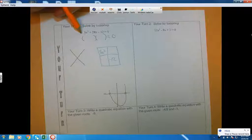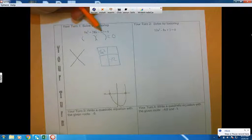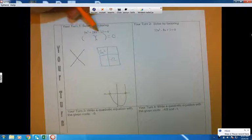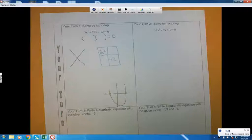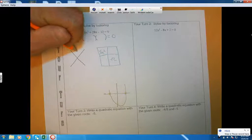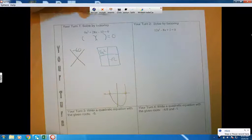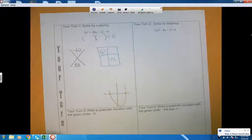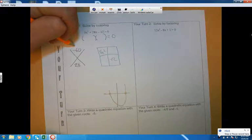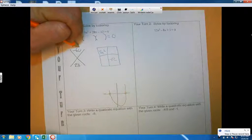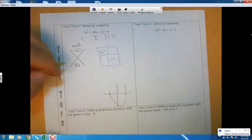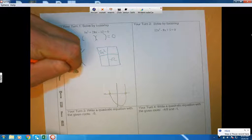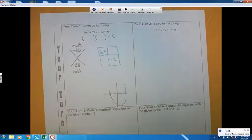You take the number that's in front of the squared term, and you take the number that's all by itself at the end, and you take those two numbers together, and you multiply them. Five times negative 12 is negative 60. You take that number that's in the middle, the 28, and you just put that number at the bottom. And what that means is what we're looking for is two numbers that multiply to negative 60, and that at the same time will add to 28.